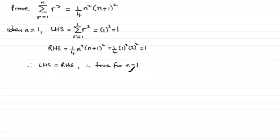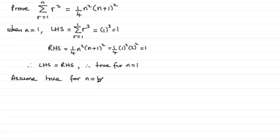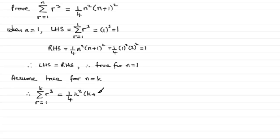Now we've proved that it's true for n equals 1, we assume it's true for a particular integer value of n — we normally call that k. So we say: assume true for n equals k, and we've got to show that it's true for n equals k plus 1 based on this assumption. If it's true for n equals k, therefore the sum of r cubed going from 1 to k equals a quarter of k squared multiplied by k plus 1, all squared.